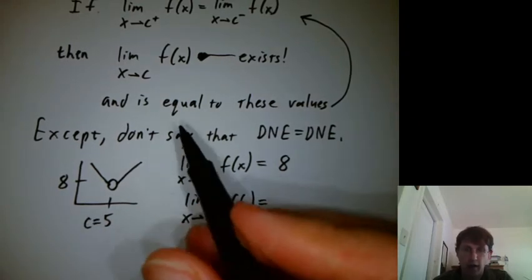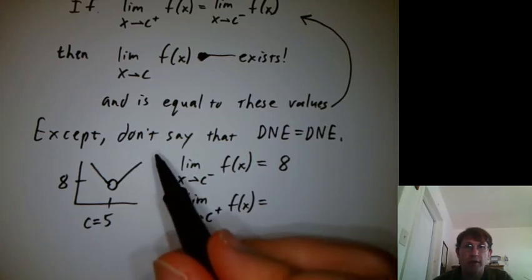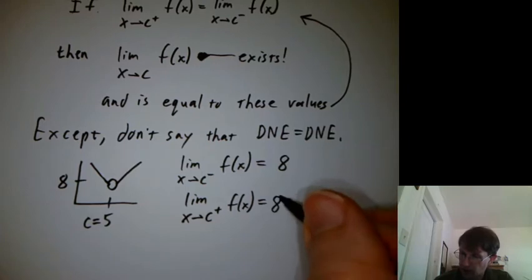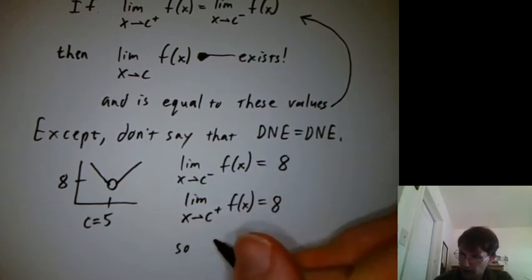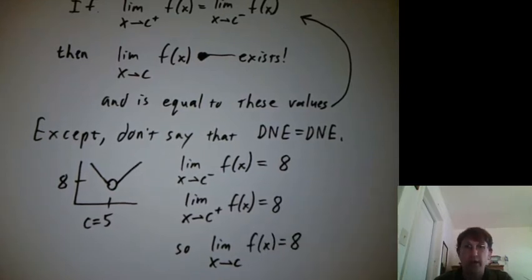So then we'd say the limit as x goes to c without a plus or minus is equal to eight.